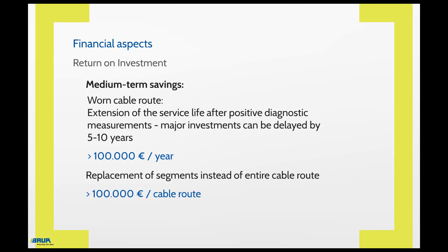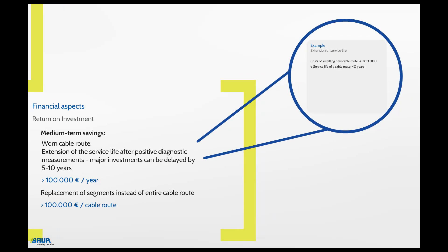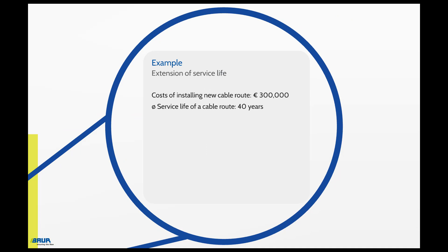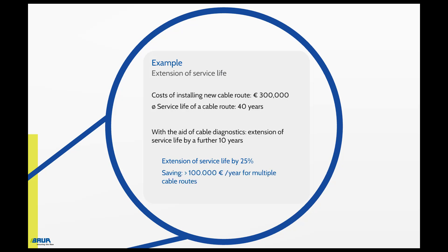Diagnostics also help when worn cable routes are being replaced. Once cables have reached a certain age, they are often replaced on a precautionary basis to prevent failures. In this situation, diagnostics can be used for condition evaluation, which can extend the service life of a cable if it turns out the cable is still in good condition. For example, if the costs for laying a new cable route are €300,000 and the normal service life is 40 years, diagnostic measurements may establish that the cable can remain in the network for another 10 years, extending its service life by 25%. If this is the case for several cable routes, savings of over €100,000 per year are possible.